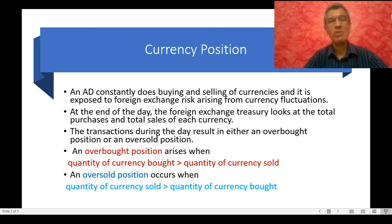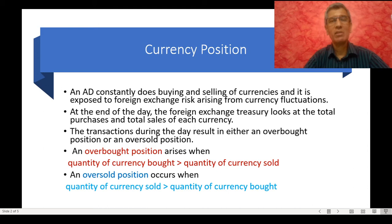An overbought position or long position is created when the quantity of currency bought exceeds the quantity of currency sold by the authorized dealer during a particular period, say during a day. On the other hand, an oversold position or short position is created when the quantity of currency sold exceeds the quantity of currency bought by the authorized dealer during a certain period, say during a particular day.